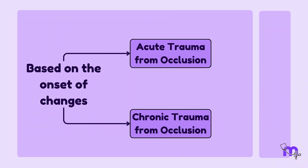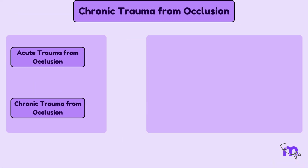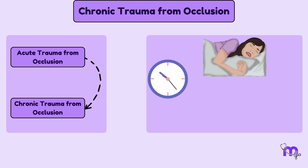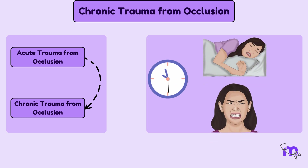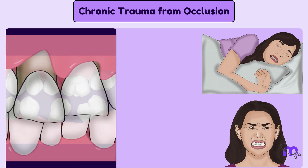Next, let's move on to chronic trauma. It may occur as a consequence of acute trauma. But more commonly, it is seen as gradual changes in the occlusion in patients with parafunctional habits like bruxism and clenching. These changes include tooth wear, drifting, and extrusion of teeth.